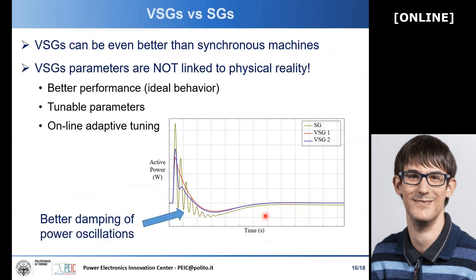This is not something we can do with real synchronous machines. This is why virtual synchronous machines can be even better than synchronous machines — they can feature better performance since we are dealing with an ideal model, not a real one. We have tunable parameters that we can change even online with adaptive tuning. For example, if the grid conditions change, we can change the parameters. As you can see here, the inertial behavior in yellow shows the behavior of a real synchronous generator with large power oscillations, which are undesirable. Virtual synchronous generators avoid this because the virtual model eliminates the causes of those oscillations.